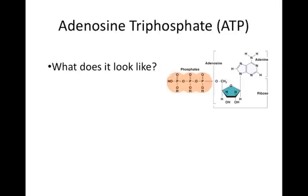Like the name implies, ATP is composed of an adenosine nucleoside and three phosphates. You can see from this diagram that an adenosine molecule is made up of the nitrogenous base adenine and the 5-carbon sugar ribose.